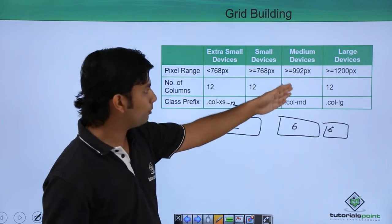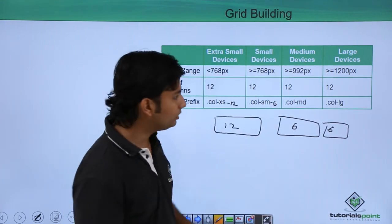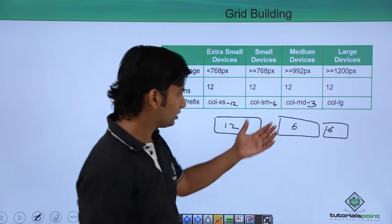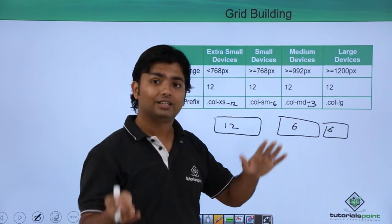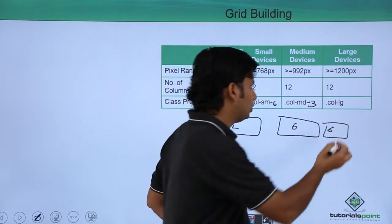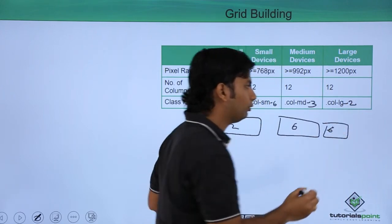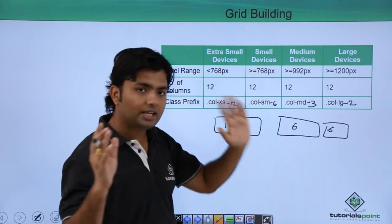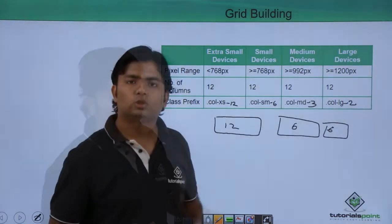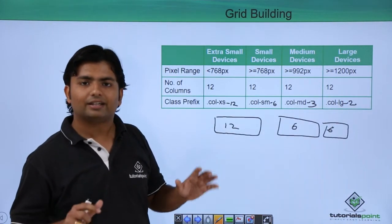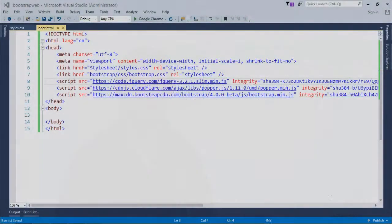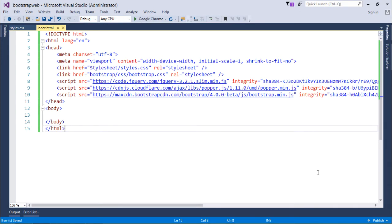For medium devices like a 14 or 15-inch laptop, you use the col-md prefix and specify how many columns a particular div should use. col-lg is for large monitor sizes. The same design will look differently across screen sizes. Let's start working with the grid system practically to see how the same page can have different layouts for different screen sizes.